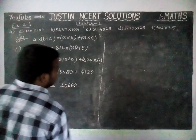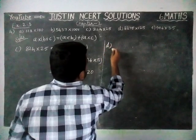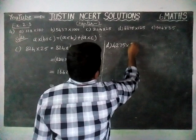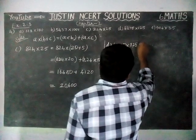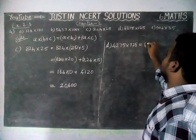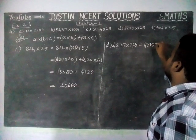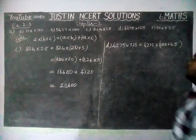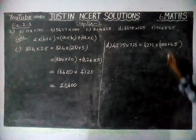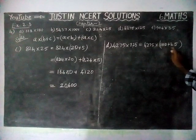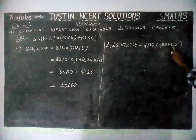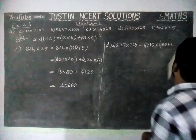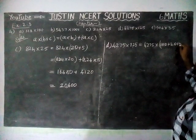Next we will solve option D. 4275 into 125 is equal to 4275 into 100 plus 25. We can do it in 2 methods — we can separate 100 plus 25, or we can multiply 100 plus 20 plus 5. We are going to solve this in the 100 plus 20 plus 5 model.